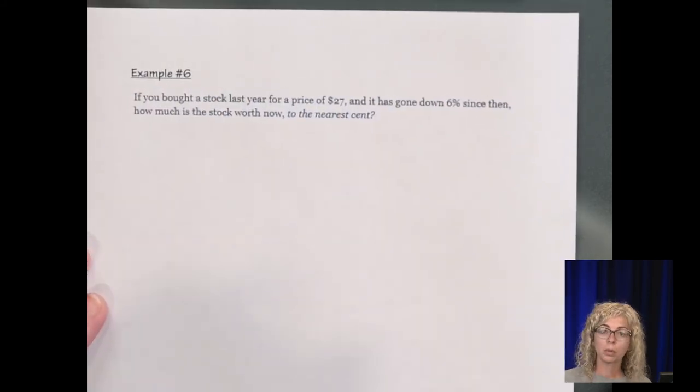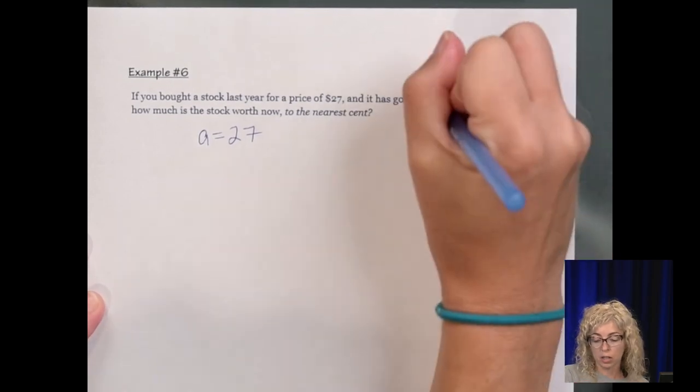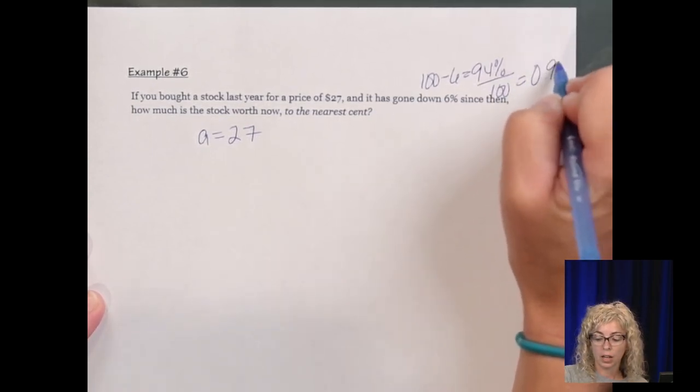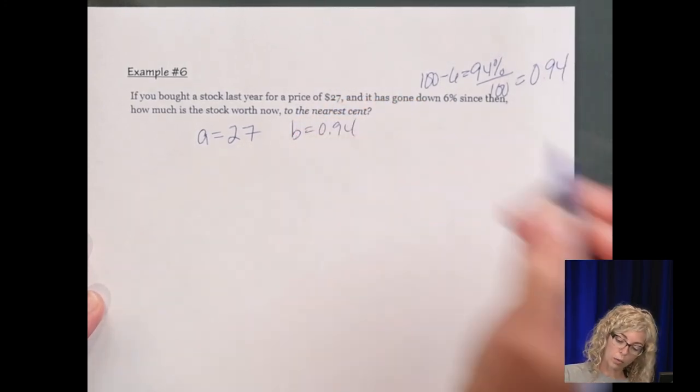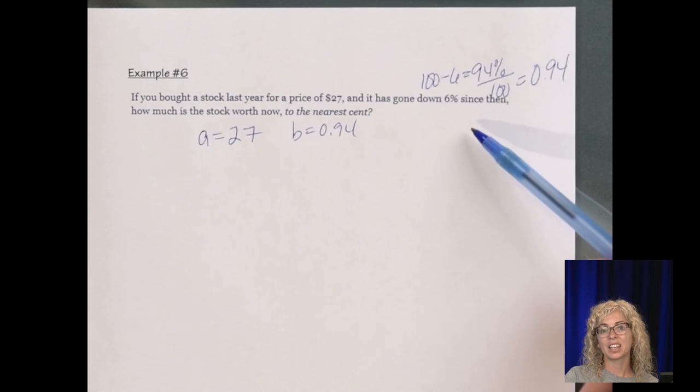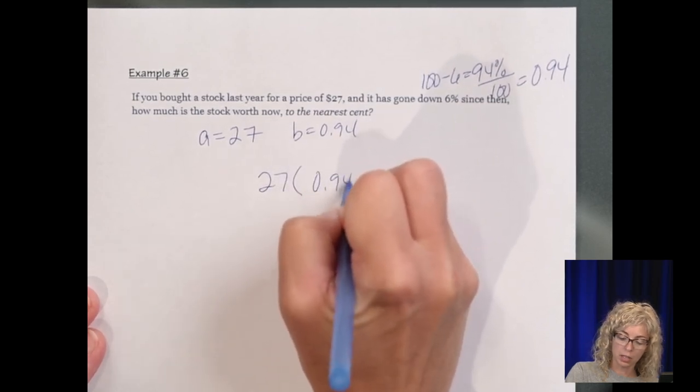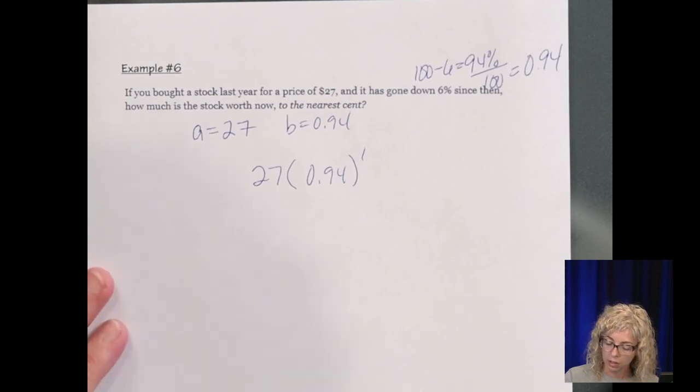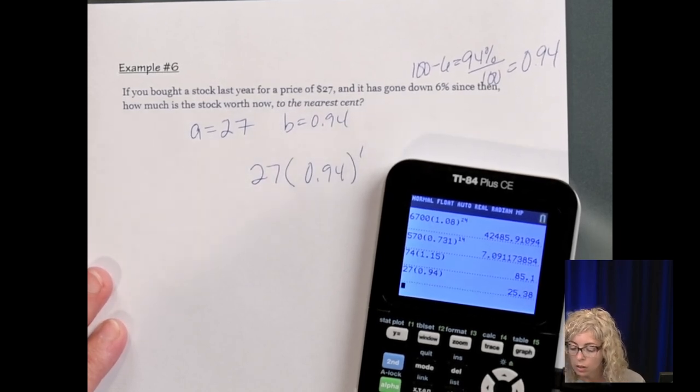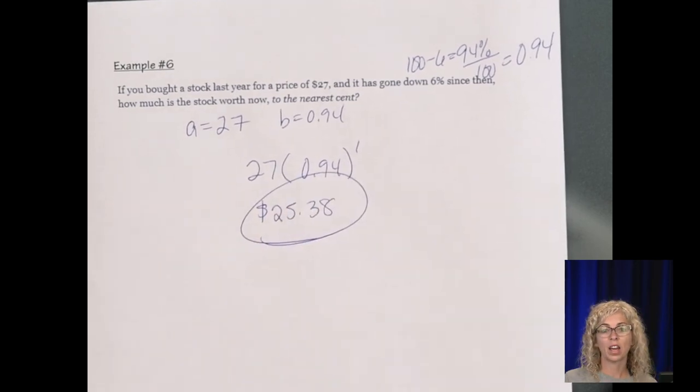Last one. We bought a piece of stock for $27. So that's our starting value. And it's gone down 6%. So 100 minus 6 is 94%. Divided by 100 to get the decimal is 0.94. So our B value is 0.94. How much does the stock worth now to the nearest cent? So it's gone down that much since then. So it's just looking at that one period of time. So it's $27. So A times B to the X. Looking at over that one time period. So typing that in the calculator, is $25.38.